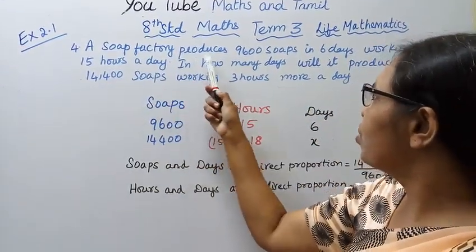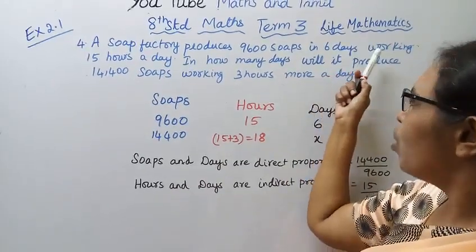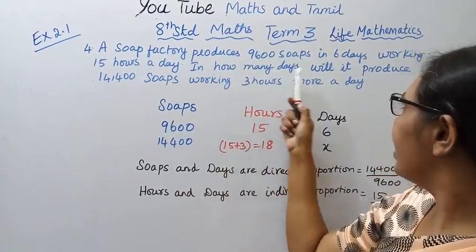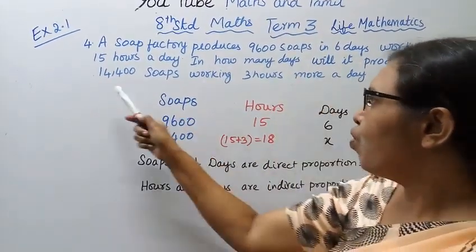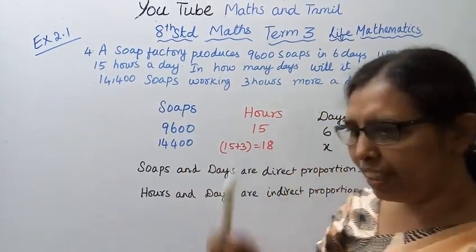A soap factory produces 9600 soaps in 6 days, working 15 hours a day. In how many days will it produce 14400 soaps, working 3 hours more a day?